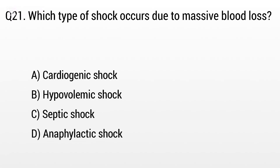Question 21. Which type of shock occurs due to massive blood loss? The right answer is Option B: Hypovolemic shock.